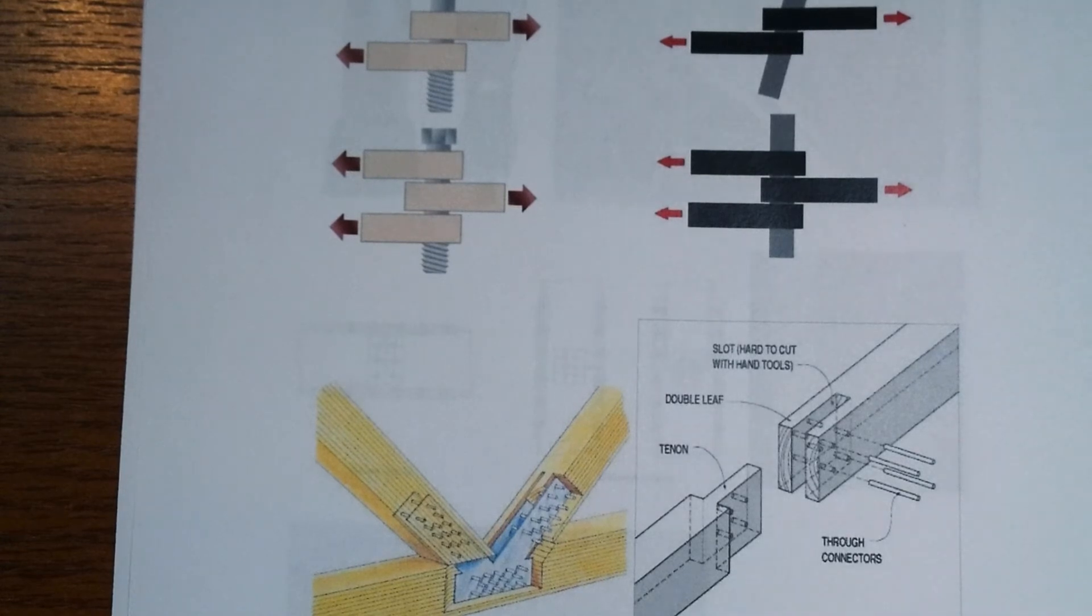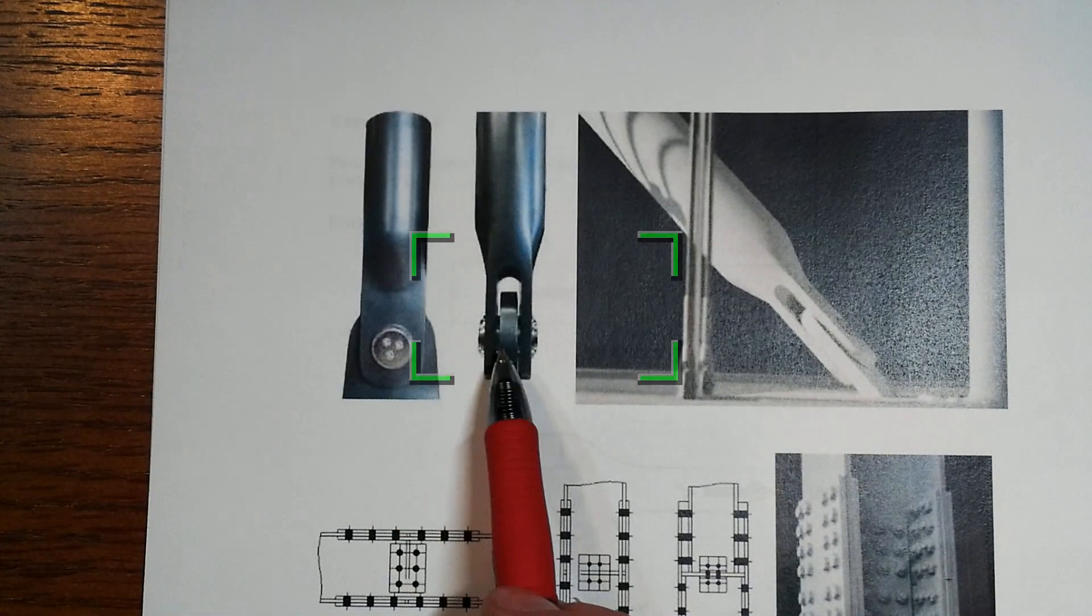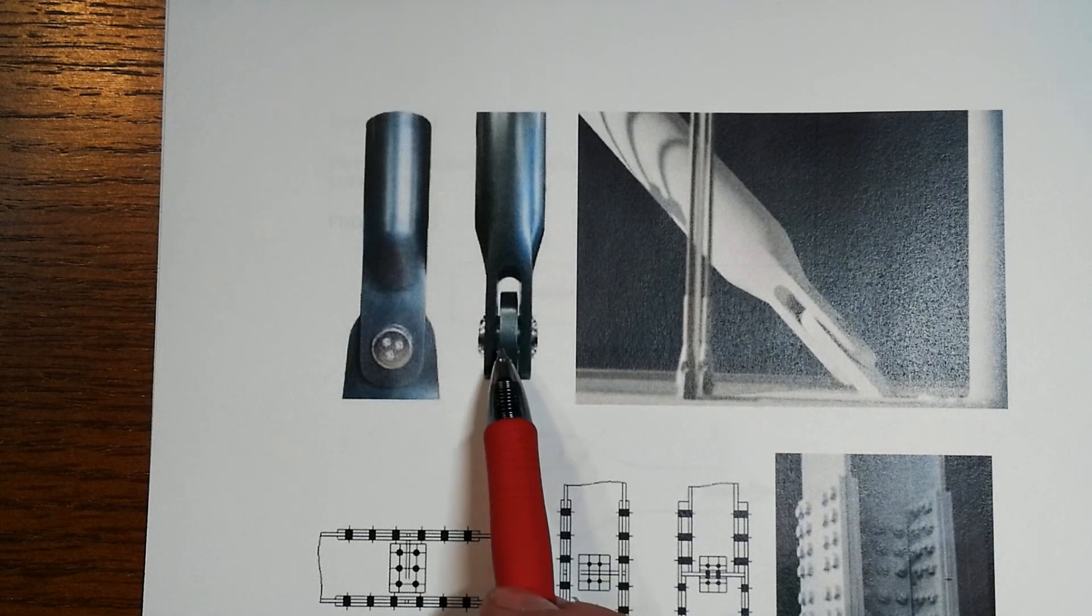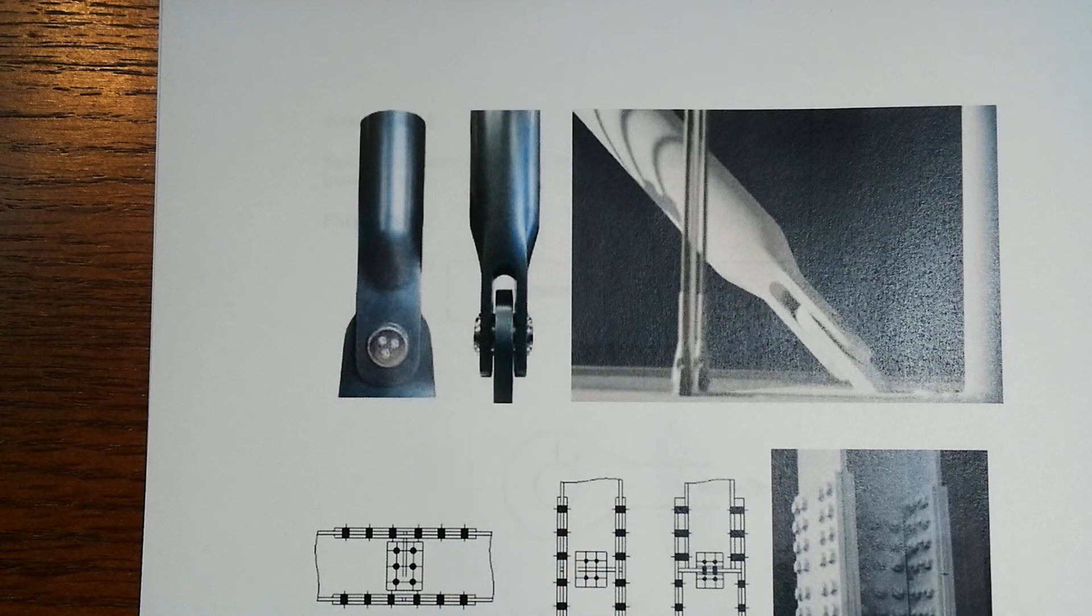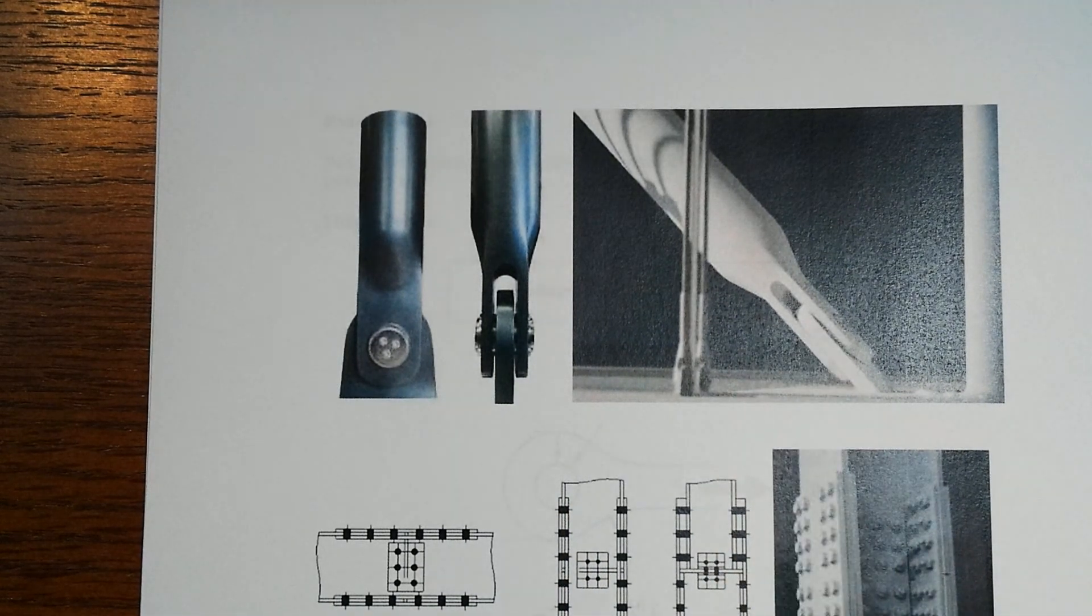On the next page, you see the same kind of situation, real-world situation, where you've got then just one piece going through, and then the other one, though, is forked, and you've got what amounts to being double shear there. Another example in real application on that side.